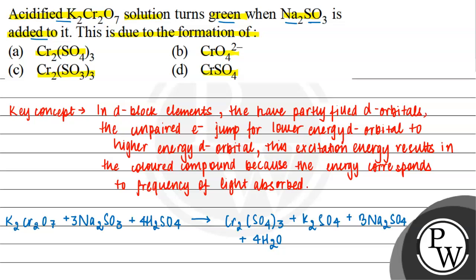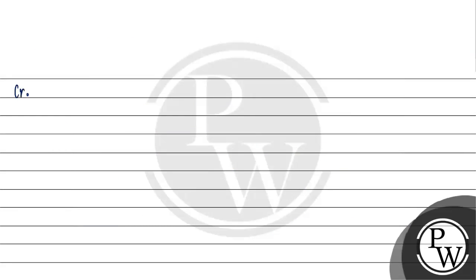Now, if we look into the compound which is formed, Cr2(SO4)3, this is the reason why the solution turns green. It gives 2 Cr3+ ions and 3 SO4 2- sulfate ions.